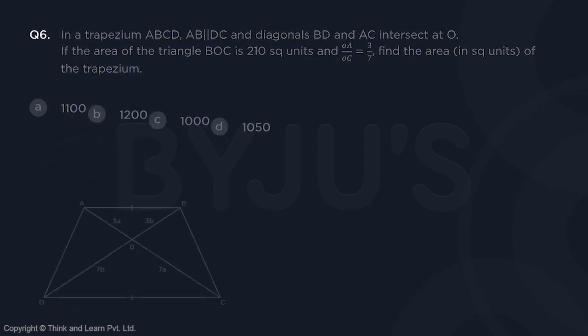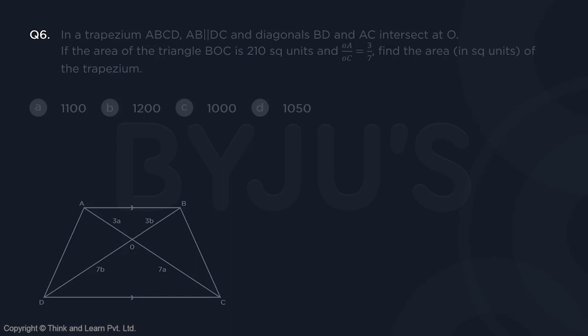So let's draw the figure. So we have the figure over here, ABCD, B and D intersect at O, the area of the triangle BOC, so this is BOC, this area is 210 square units.